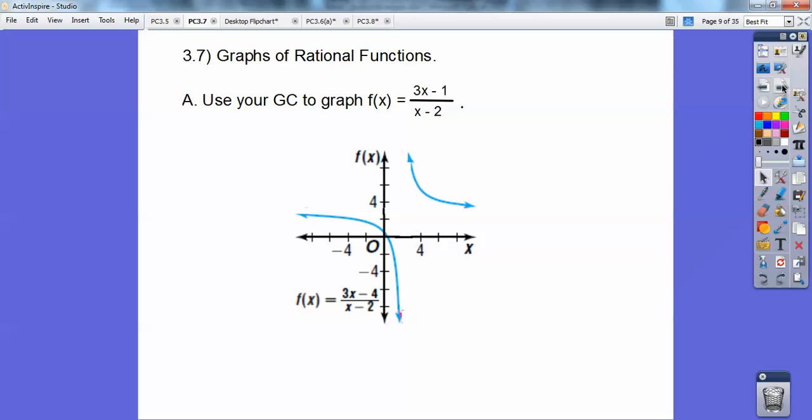Now what happens is, is this graph is asymptotically getting close to a horizontal line right here. Remember the word asymptote from Algebra 2? There's another asymptote going right here, right down here. This asymptote right here is found by letting the denominator equal 0. x minus 2 equals 0. So this asymptote was right here at x equals 2.